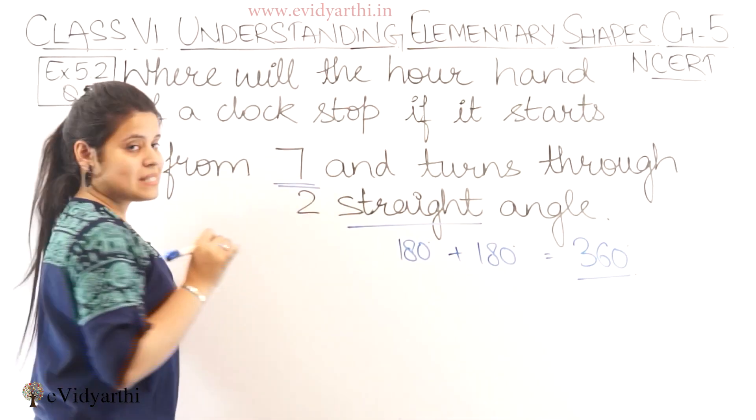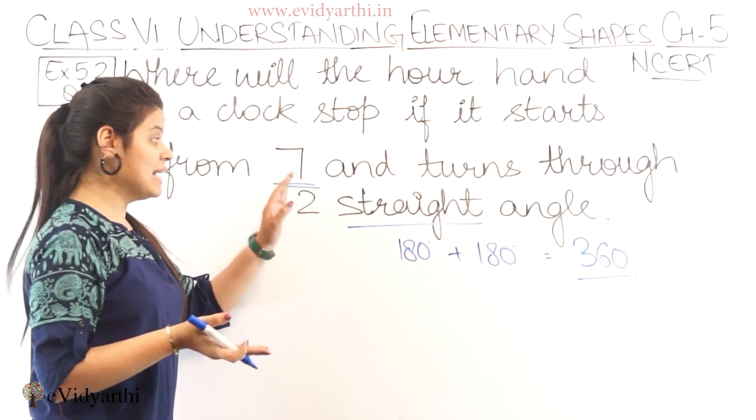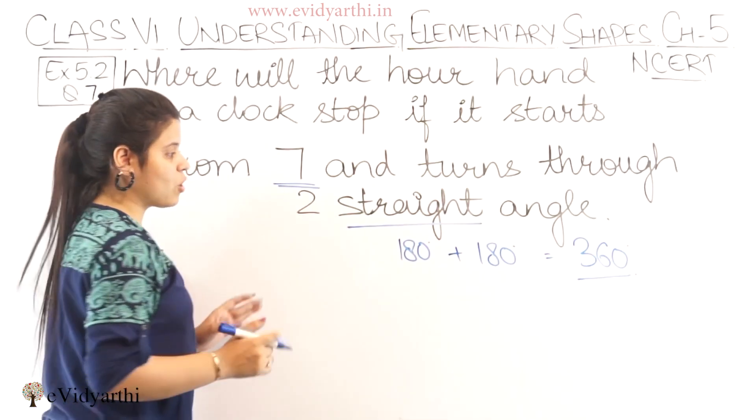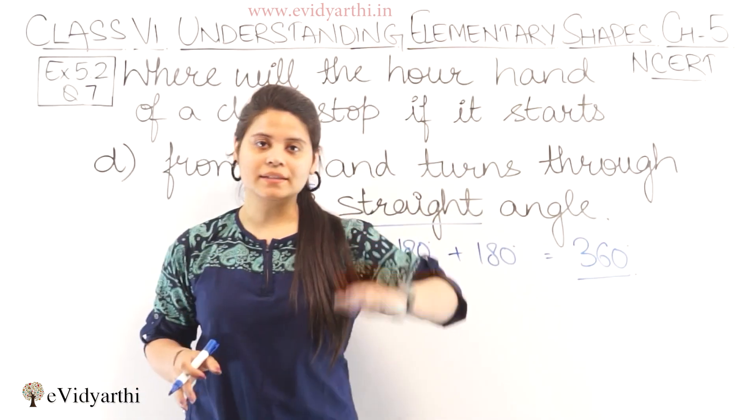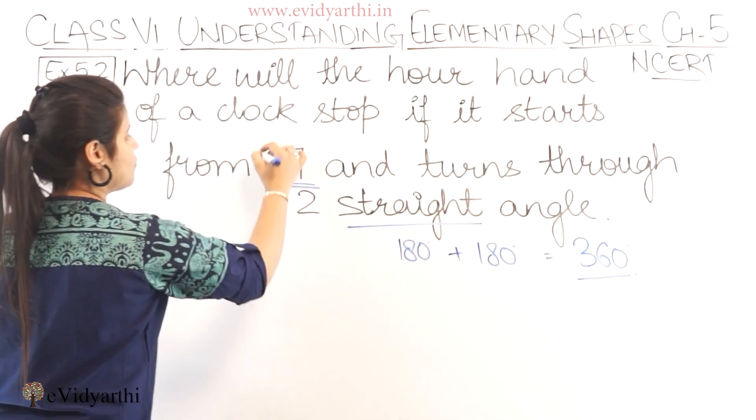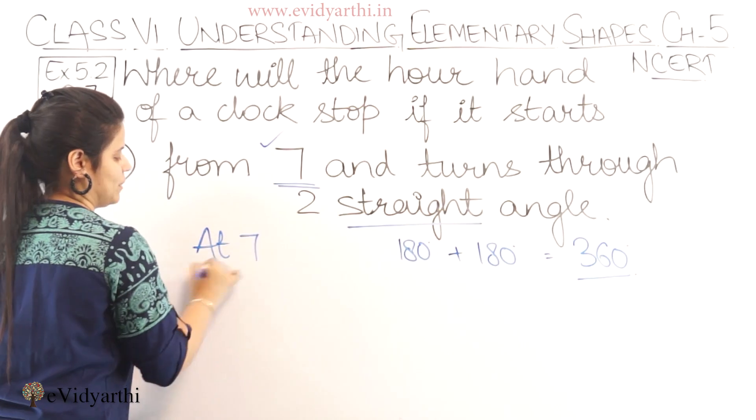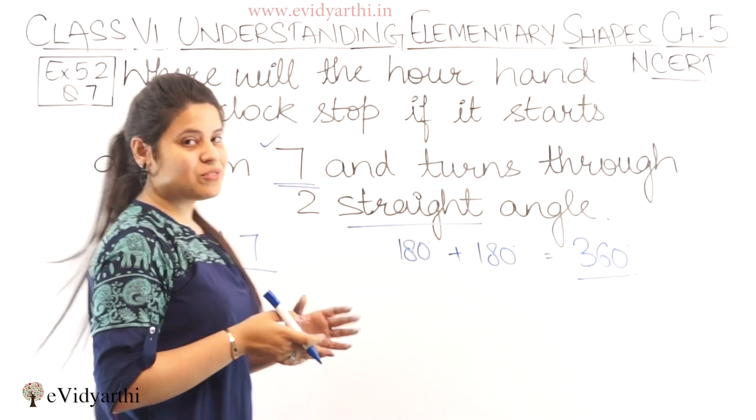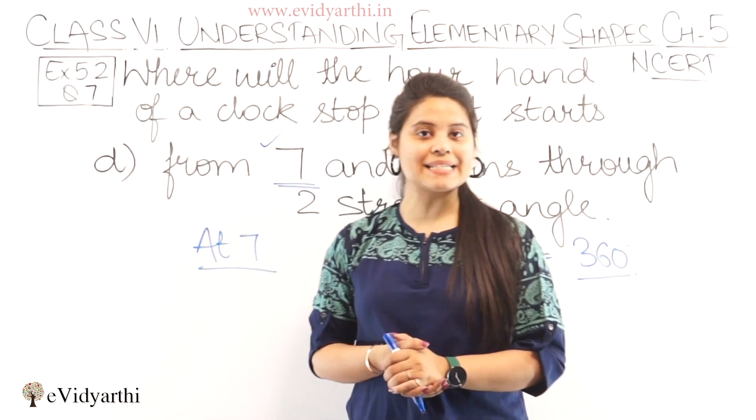And 360 degrees is a complete revolution. So if it starts from 7, after a complete revolution where will it come? At 7 itself, right. Because we know in a full revolution, from whichever point we start, turning around we come to that same point. So this means if we start from 7 we'll end at 7. So this was the last part of this question and also the last question of this exercise. With this we complete our exercise.